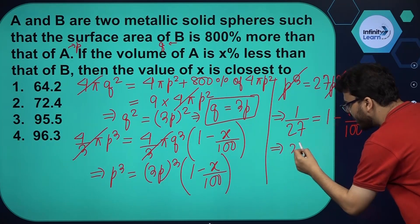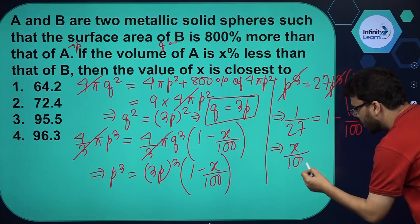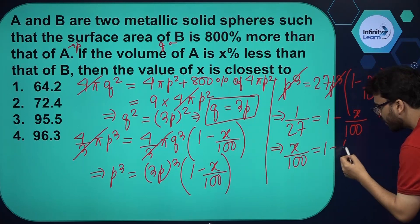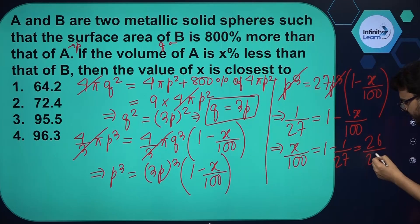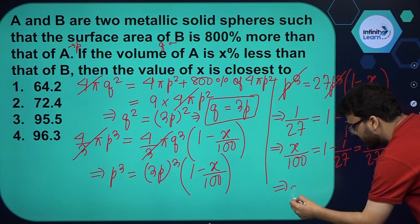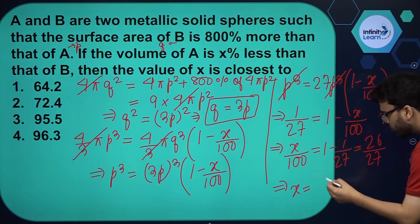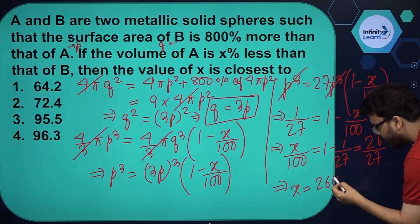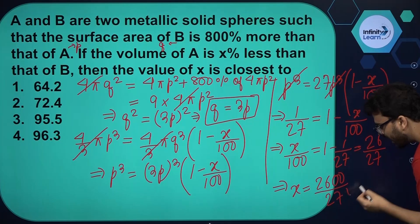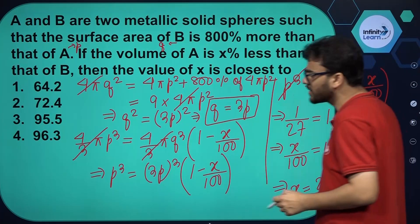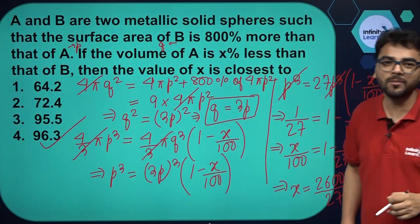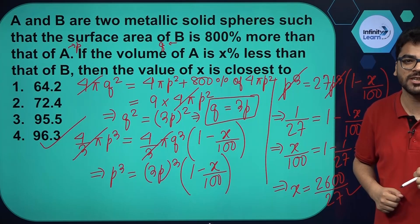So x/100 = 1 - 1/27, which simplifies to 26/27. Therefore x = 2600/27. If we further simplify, x is approximately equal to 96.3. I hope this is clear to every student watching this video.